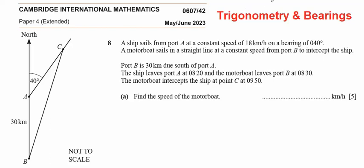The question is: A ship sails from port A at a constant speed of 18 km per hour on a bearing of 40 degrees, so it moved from A and moving in this line. Whereas a motorboat sails in a straight line at a constant speed from port B to intercept the ship. So from here, the boat is going with a constant speed.